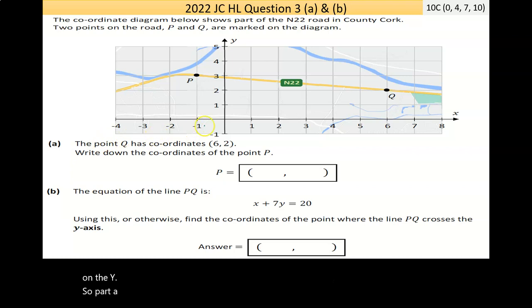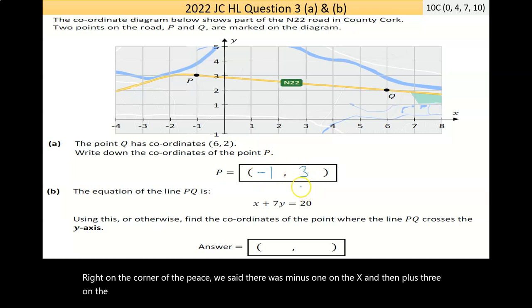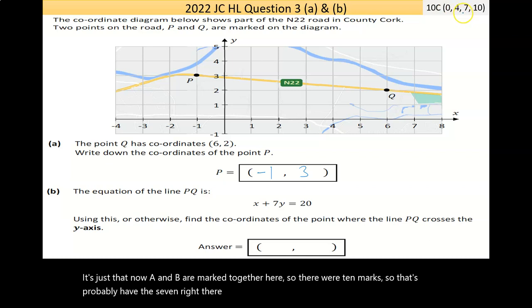Part A is saying the point Q has coordinates 6, 2. That's 6 on the X, 2 on the Y. Write down the coordinate of the point P. We said there was minus 1 on the X and then plus 3 on the Y. A and B are marked together for 10 marks. One part correct usually gets the high partial.